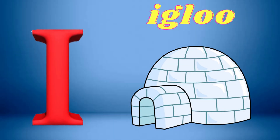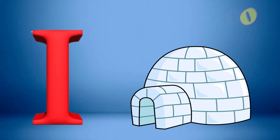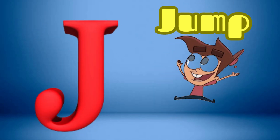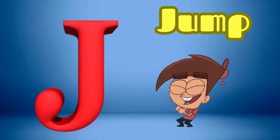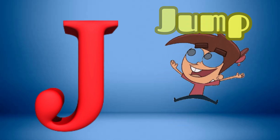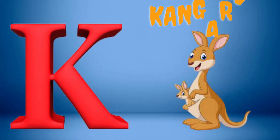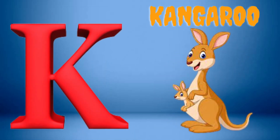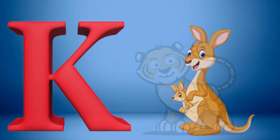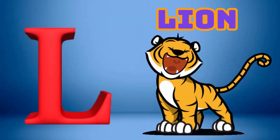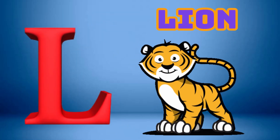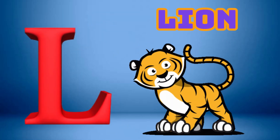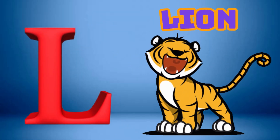I is for Igloo, I-I-Igloo. J is for Jump, J-J-Jump. K is for Kangaroo, K-K-Kangaroo. L is for Lion, L-L-Lion.